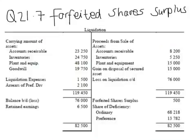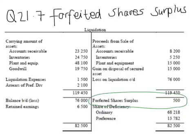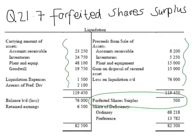In question 21.7, we see a credit entry to the liquidation account for forfeited shares surplus. The question was raised about how this surplus was calculated. This forfeiture of shares is done after we've processed the journal entries resulting from the liquidation process, but before the deficit to the shareholders is calculated. It's part of the process of transferring the reserve balances — the equity balances — to the liquidation account.